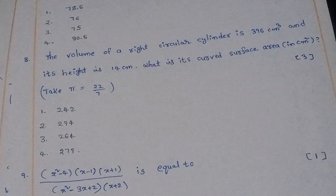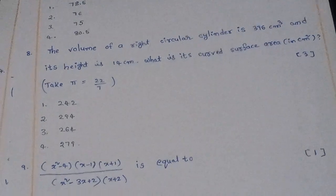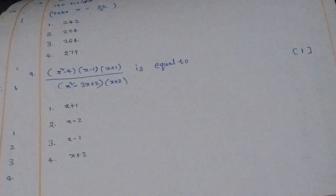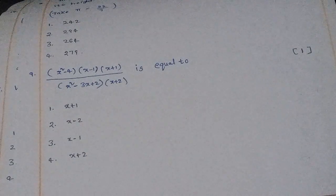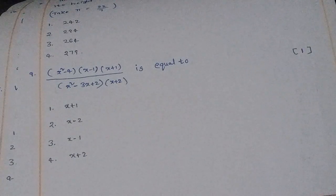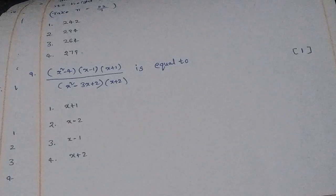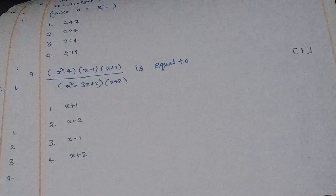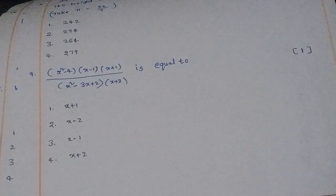Ninth question: (x² − 4)(x − 1)(x + 1) divided by (x² − 3x + 2)(x + 2) is equal to what? The right answer is option 1: x + 1.